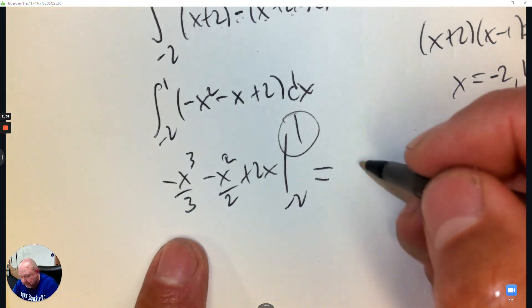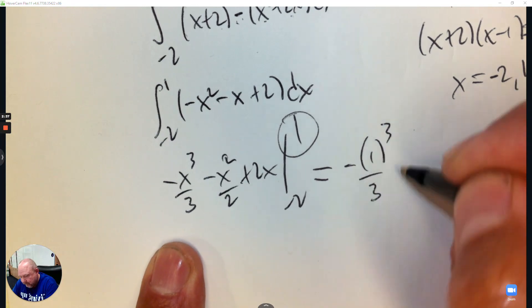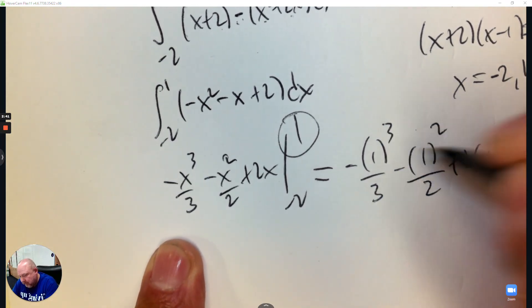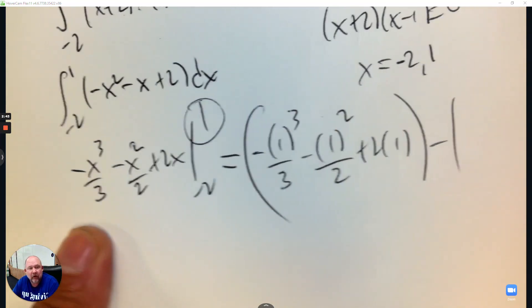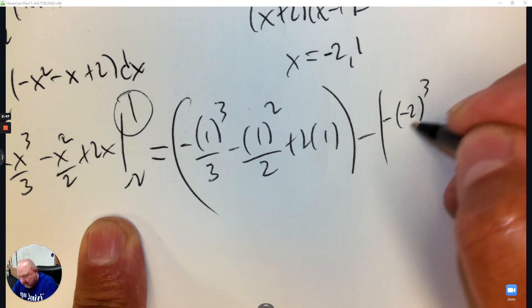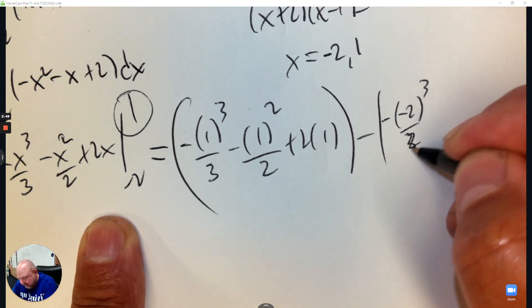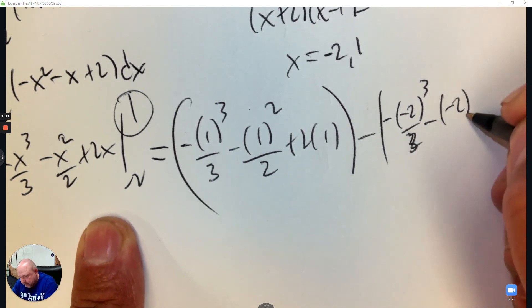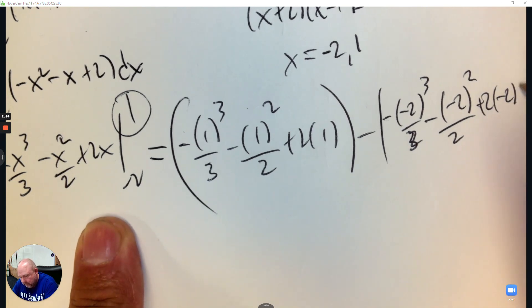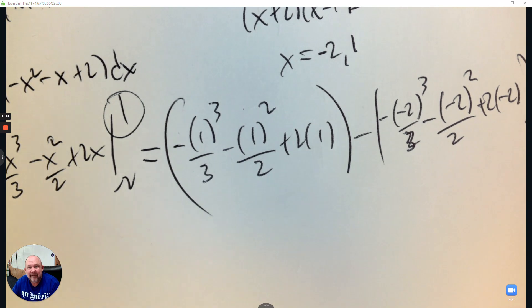The last step is to plug in the upper limit. Put parentheses around it. Subtract the lower limit. So the same thing, just with negative 2. And then I won't make you simplify that. And there you go.